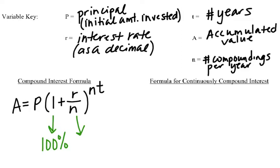So if we could compound continuously or constantly, then we would have another formula. So my second formula is for continuously compound interest.